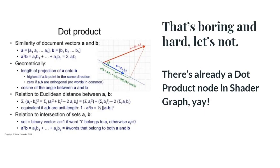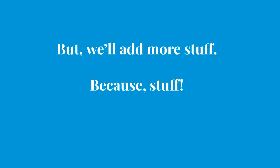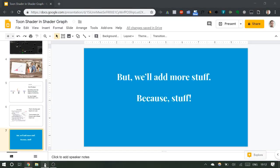If you look at the math for the dot product, it can be intimidating. But there's already a dot product node in Shader Graph, so we don't have to do anything about that. Then we're going to add more stuff. That's the end of my presentation slides — now we get to build.